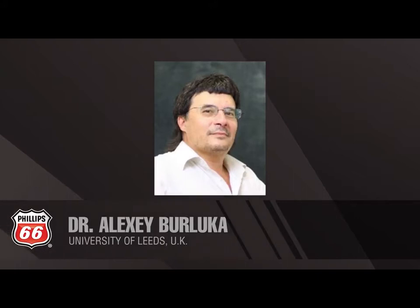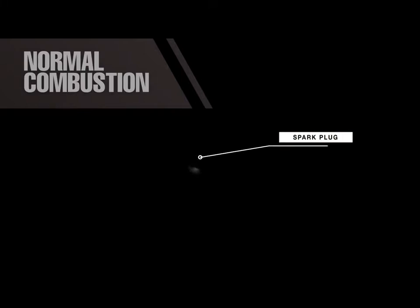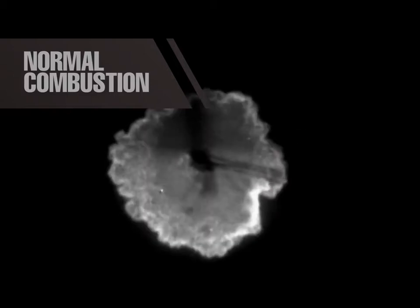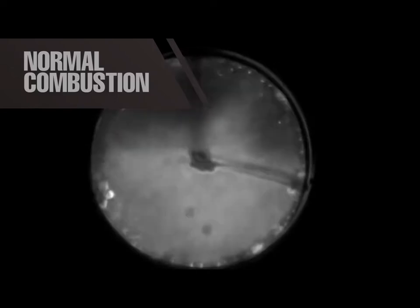Let's take a look at normal combustion. These videos are courtesy of Dr. Alexi Berkla at Leeds University in the United Kingdom. He and his students developed a test rig that demonstrates and captures video of what normal and abnormal combustion looks like. Abnormal combustion would be an LSPI — low-speed pre-ignition event. The spark plug is in the center of the frame, and in normal combustion, the flame starts right at the center and moves outward at a nice, uniform pace.